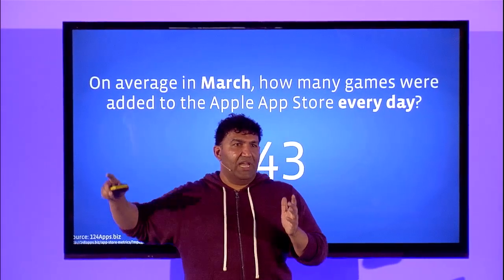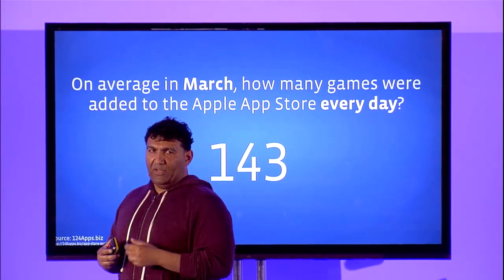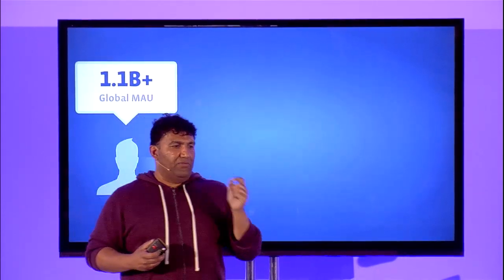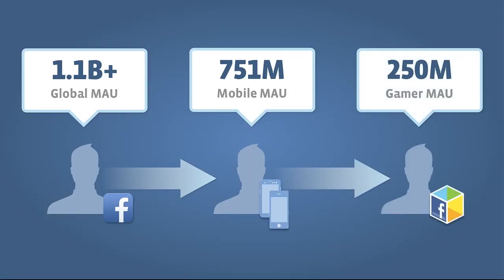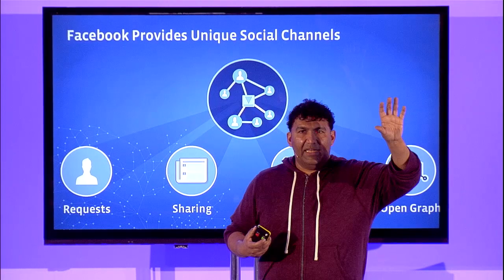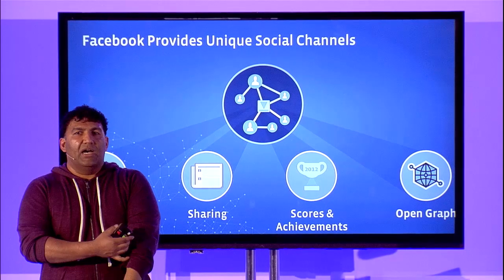It's very hard to break through when 78% of iOS and 72% of Android apps are games. But your golden ticket to breaking through is Facebook. 1.1 billion people a month use Facebook; 751 million of them use it from a mobile device; 250 million and more are gamers. Facebook provides unique social channels that help you break through all that noise — taking that mobile app install ad from one initial download into organic growth among people and their friends.